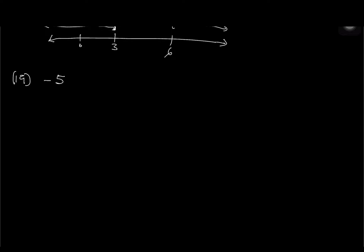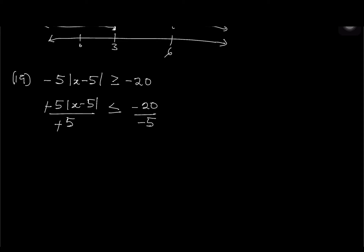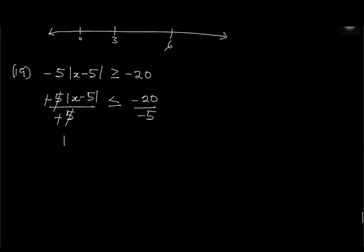Number 19: negative 5 times absolute of x minus 5 greater than or equal to negative 20. Divide both sides by negative 5 — because you're dividing by a negative number in an inequality, you flip the inequality sign. This gives absolute of x minus 5 less than or equal to 4.